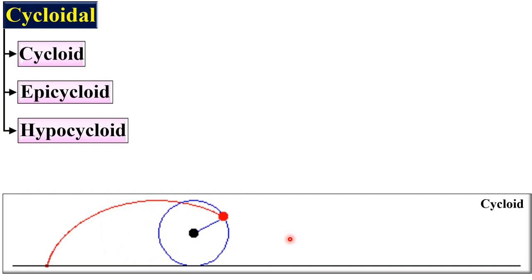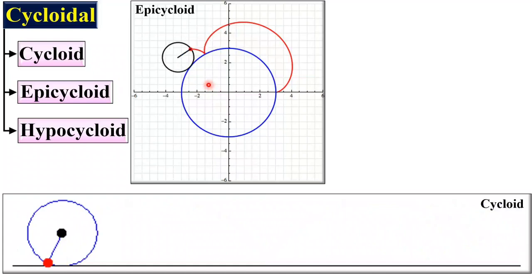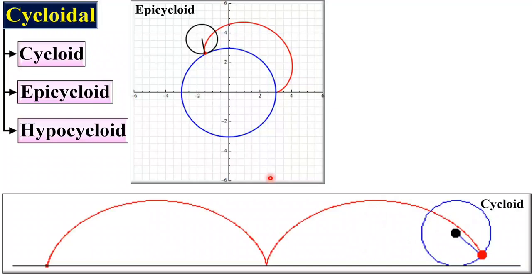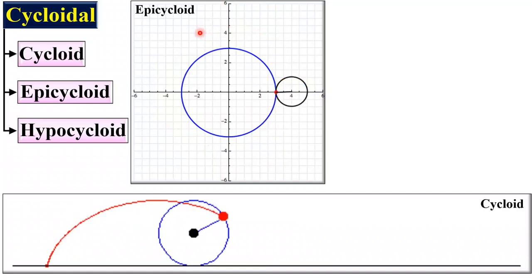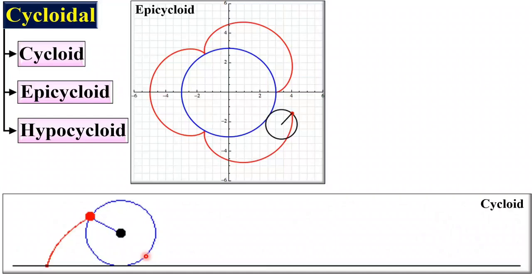The next one is the epicycloid. Can you differentiate — what is the difference between cycloid and epicycloid from this figure? If the rolling circle rolls on another circle, then it is called the epicycloid. Here the rolling circle rolls on a straight line, that is why it is the cycloid.